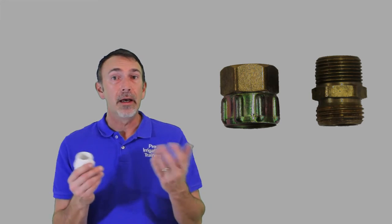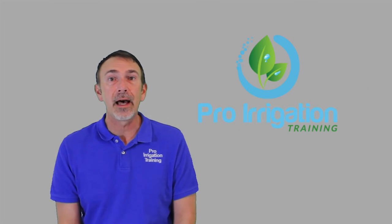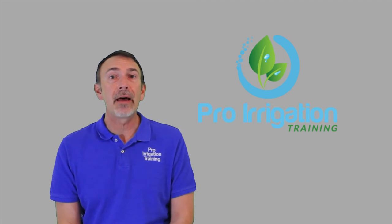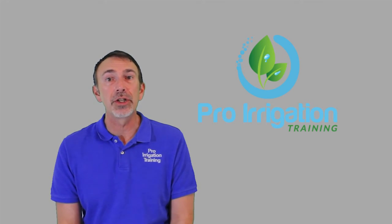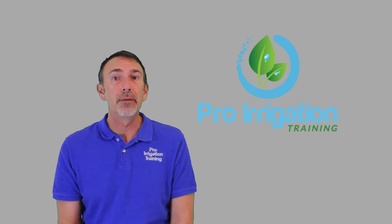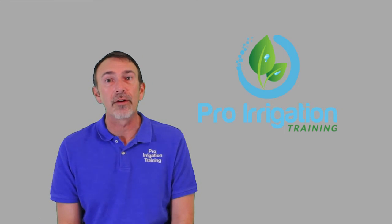There are all kinds of adapters out there for you to go male to male, male to female, to switch from hose threads to pipe threads. Watts is one of the manufacturers that make a lot of little brass fittings that can adapt over any way that you need to any size. Because there's a lot of people out there that do run irrigation just off of a hose bib or an external faucet on the side of their house.